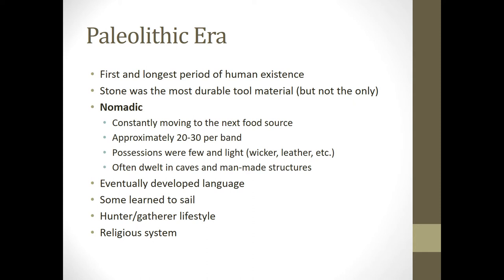Humans didn't live by themselves in this era — they lived with other humans, and typically those groups would be of about 20 to 30 people working together as they moved from place to place. The possessions that humans had were very few and very light, because the more stuff you have, the harder it is to be mobile. Having very few, easy-to-carry possessions made it a lot easier for a nomadic society to keep moving.